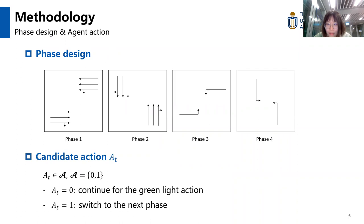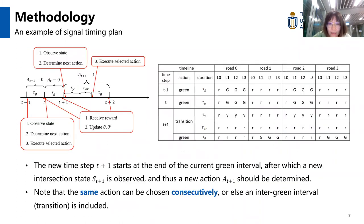The action space consists of two elements: one representing continue for the green light action with a_t equals zero, or switch to the next phase with a_t equals one. An inter-green interval is included if the action between two consecutive time steps are distinct. This page gives an example of signal timing. To start with, a fixed green light duration tau_g is given for the first phase, and the agent shall execute one action after observing intersection state s_t at the beginning of each time step t. The new time step t+1 starts at the end of the current green interval, after which a new intersection state s_{t+1} is observed, and a new action a_{t+1} should be determined. The inter-green period consists of two elements: a yellow light with duration tau_y and an all-red period with duration tau_ar. The traffic signal timing point corresponding to the action is shown on the right side. Note that the same action can be chosen consecutively.